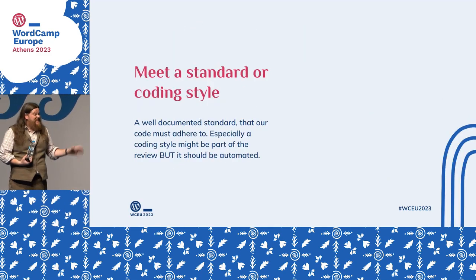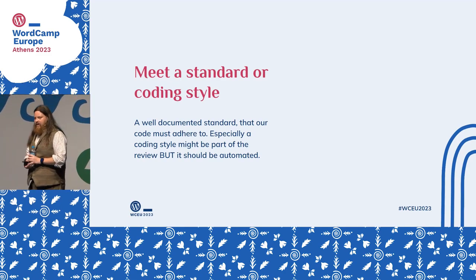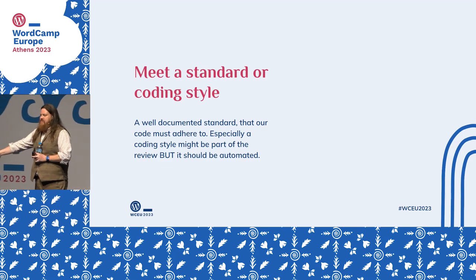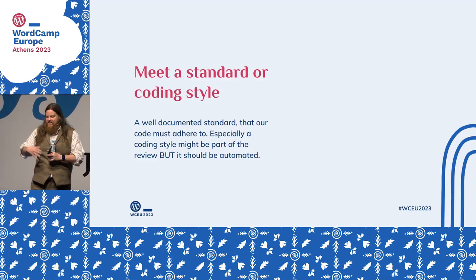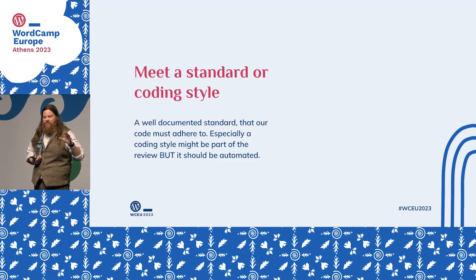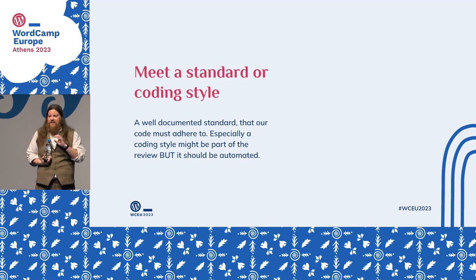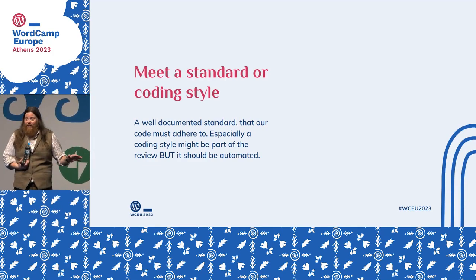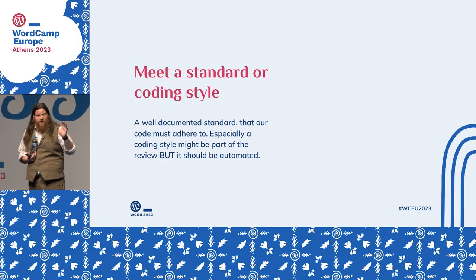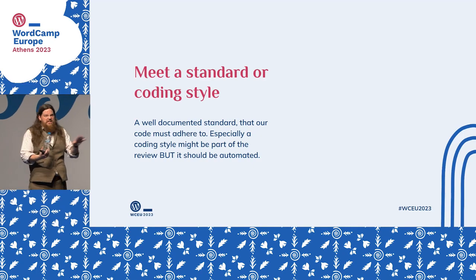The second reason is we might be required to meet some sort of internal standards — a coding style, a set of how we do certain things, what design patterns we might be using. But if you've got any of those being picked up in a manual code review, you're doing it wrong, because you can automate all of that. If you as a company have a standard and it is not automated, it's not a standard — what you have is a set of guidelines.